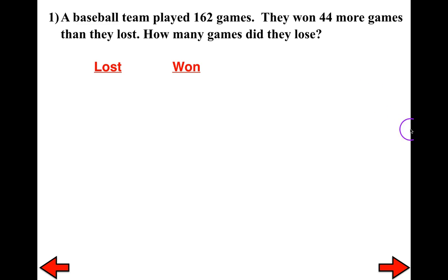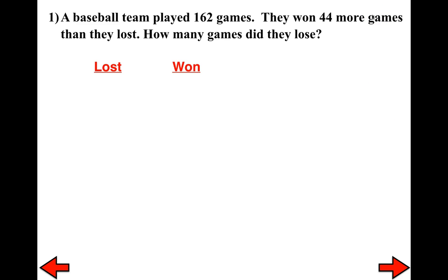What I'm going to do is choose a variable that correlates to what I'm trying to solve — you don't necessarily have to use X or Y. In a case like this, I always assign the variable to the smaller value. Since they won 44 more games than they lost, that means they obviously had more losses. So I'm going to let L represent the number of losses.